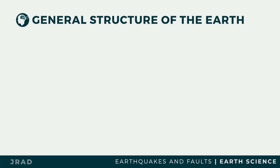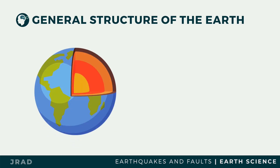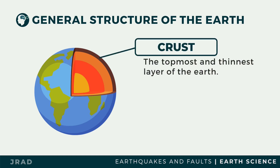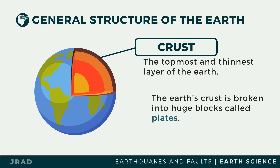To really understand what faults are, we need to recall the general structure of the Earth. The figure shows the visualization of the internal structure of the Earth. The crust is the thinnest and the topmost layer of the Earth's structure. However, the crust does not exist as one single piece — it is in fact broken into huge blocks called plates.